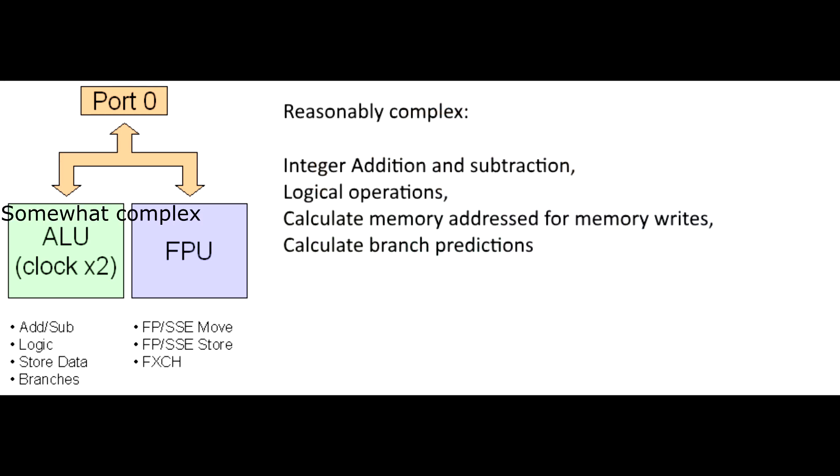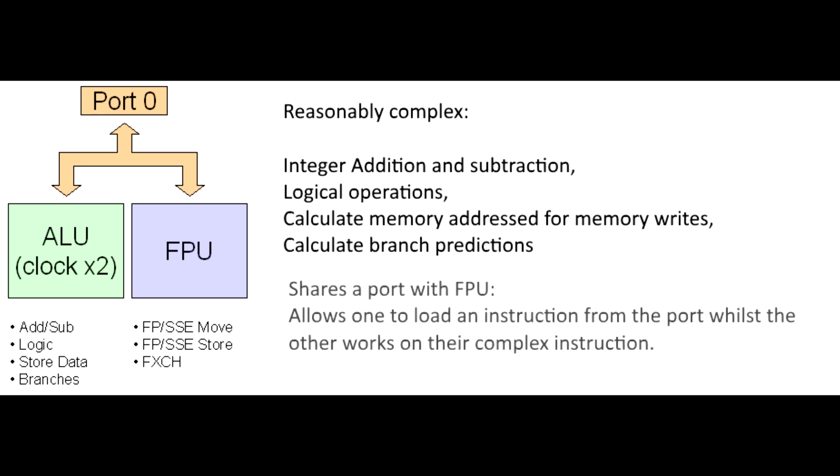The first ALU is somewhat complex, where it can do branch predictions and data stores, so it may actually take quite a number of clock cycles to complete these tasks. So double pumping it may help. Also, this ALU shares a port with an FPU, which also takes multiple clock cycles.